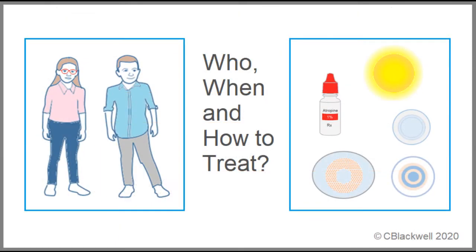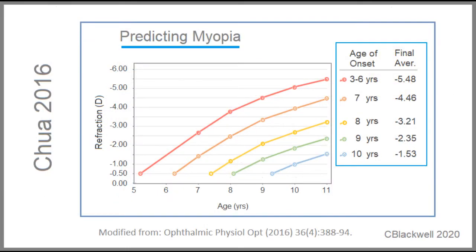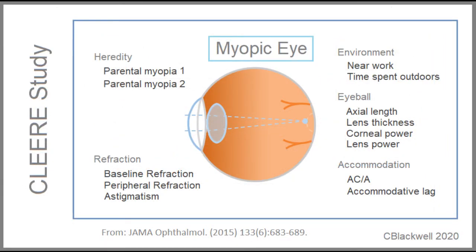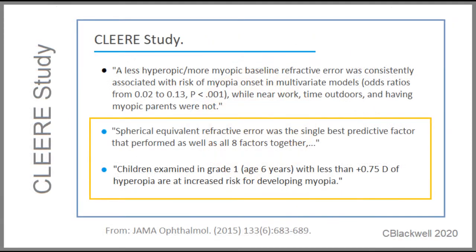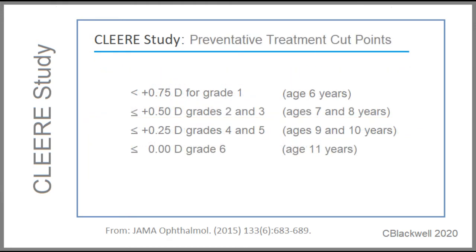We now arrive at the reason for all this work: reducing incidence of myopia, which means we face the decision of who, when, and how to treat. In 2015, the multicenter CLEAR study looked at multiple risk factors correlating with risk of developing myopia. Their conclusion was that the best predictor of myopia development was baseline refractive error — nearly the equivalent predictive strength of the other eight variables they studied put together. Using the course of natural history, they set treatment cut points. For example, they note that children at age six who are less than three-quarter diopter hyperopic are likely to end up as myopes — the same result as the previous Orinda study in 1999.